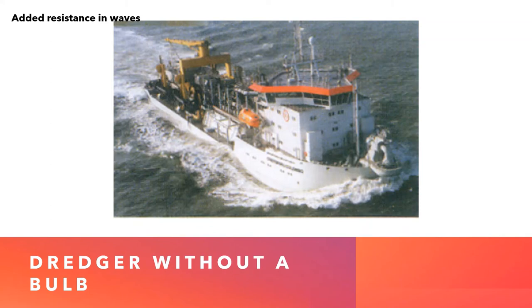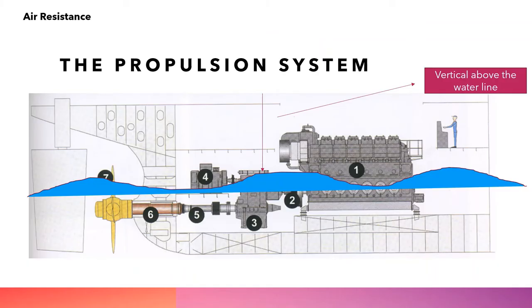The fifth type of resistance is air resistance, which depends on the area above the waterline, which varies with the draft. The resistance components mentioned in added resistance are variable and depend on wave direction and wind direction as experienced by the ship.